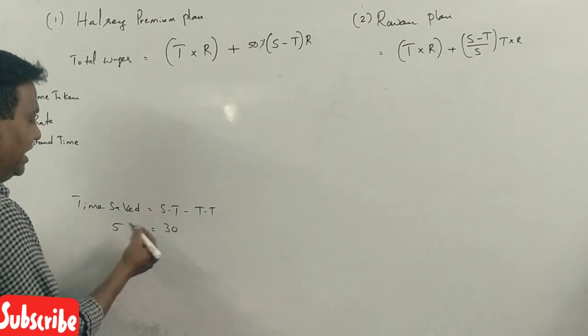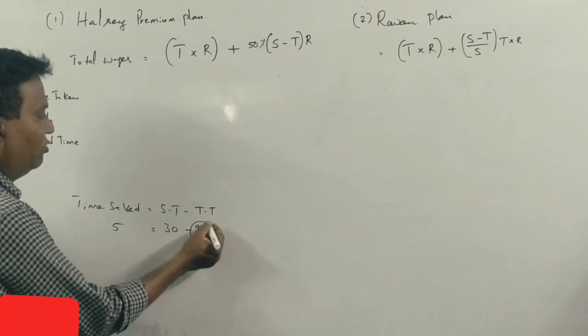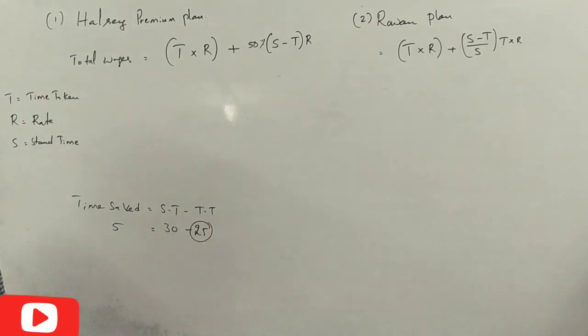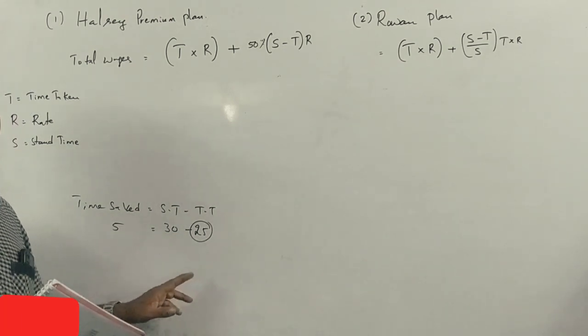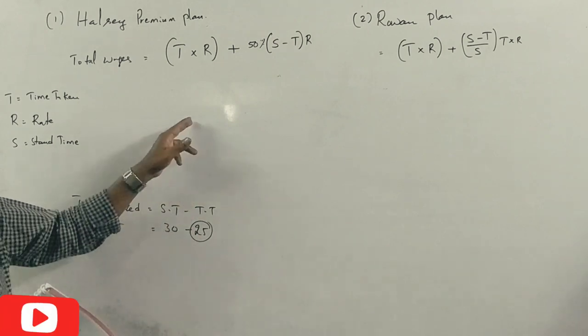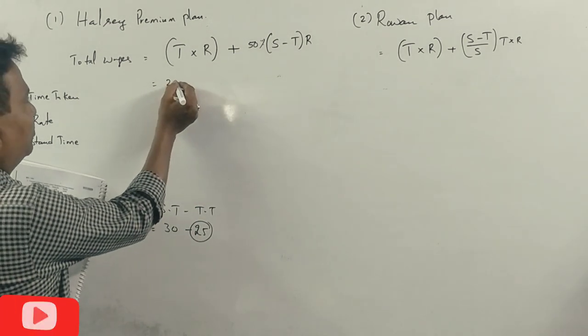So we have time taken as 25 hours. Very simple. We have to calculate the earnings using this time taken value of 25 hours.